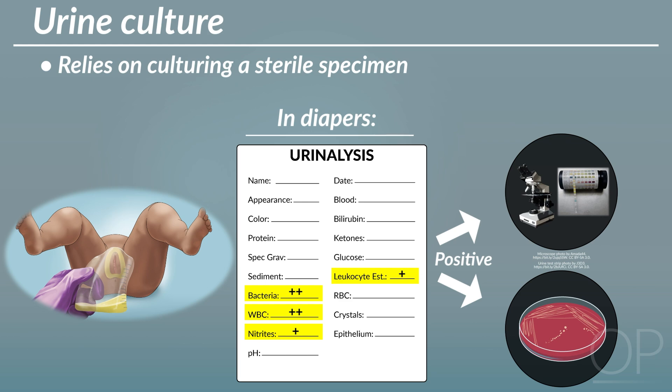Diagnosis is confirmed when urine culture grows a significant number of colonies of a uropathogen.